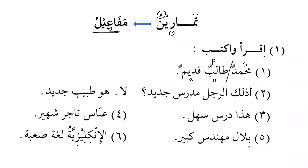Next: 'A-dhalika rajulun mudarrisun jadidun?' — Is that man a new teacher? Here adhalika is the isharah and al-rajulu means 'that man,' so it is the subject. The hamza is used for asking a question (hamzat al-istifham). The predicate (khabar) is mudarrisun jadidun. The answer is: 'La, huwa tabibun jadidun' — No, he is a new doctor. Huwa is the subject and tabibun is the predicate, and jadidun is the adjective (sifah) for tabibun.